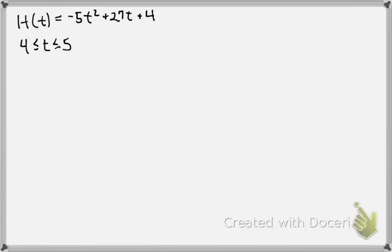In this problem, we're asked to calculate the average rate of change between 4 and 5, given the function h of t equals negative 5t squared plus 27t plus 4.